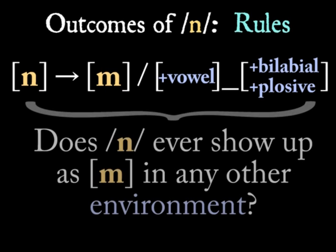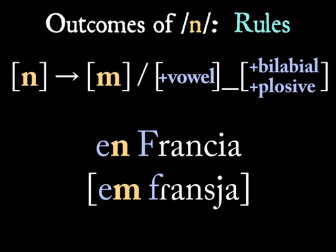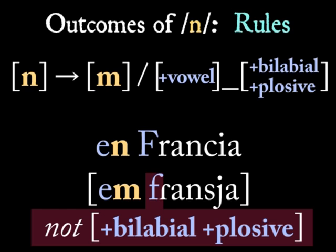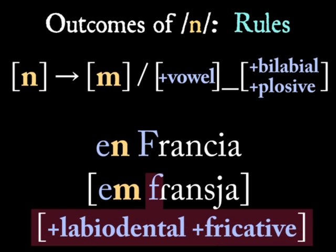One such counterexample would be if the phoneme /n/ ever shows up as an [m] before a sound that is not a bilabial or a plosive. Unfortunately, we'll eventually run into examples that break the rule in just that way. EMPRANCIA seems to follow our rule, except that the sound following the allophone [m] of the phoneme /n/ is not a bilabial plosive, it's a labiodental fricative. So, we need to find a way to strengthen our rule.